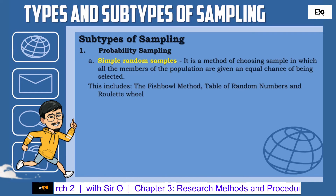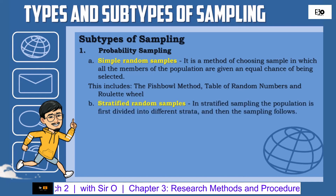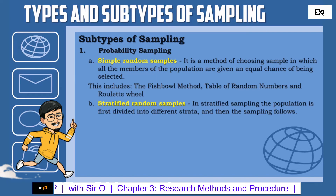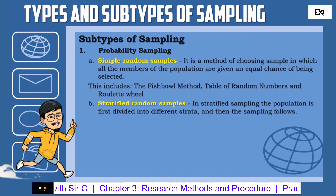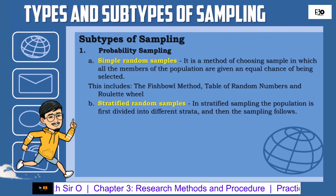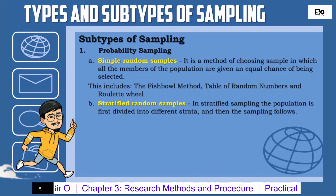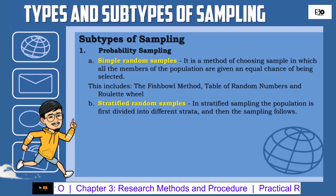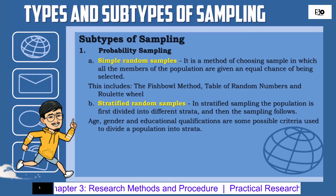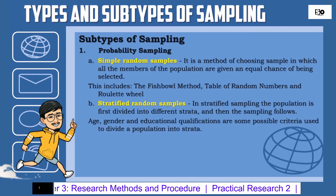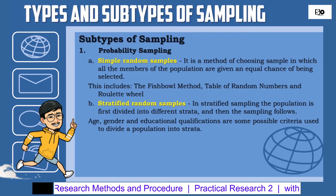Number 2: Stratified Random Samples — in stratified sampling, the population is first divided into different strata, and then the sampling follows. Age, gender, and educational qualifications are some possible criteria used to divide the population into strata.